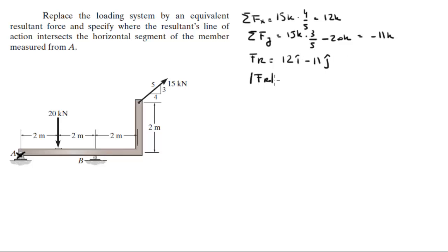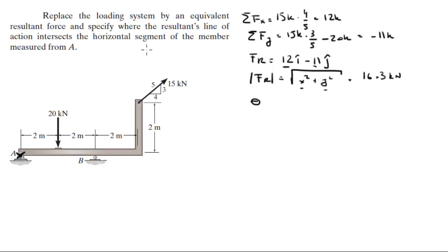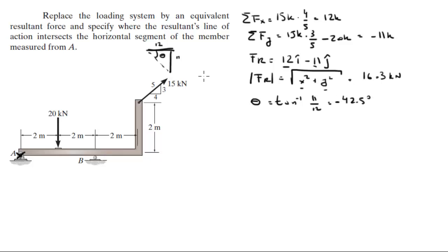The magnitude of this force is given by the square root of the x-component squared plus the y-component squared. Plugging in those two numbers gives a magnitude of 16.3 kN. Notice that it goes 12 to the right and 11 down, so the angle is given by the tangent inverse of 11 over 12, which equals 42.5 degrees — negative because it's going down.